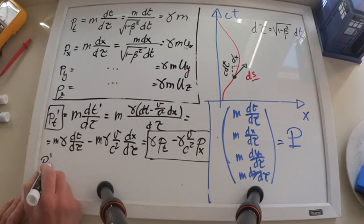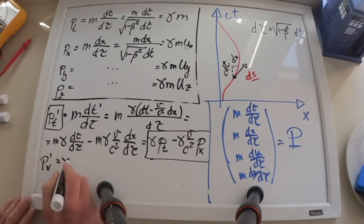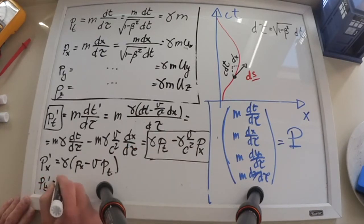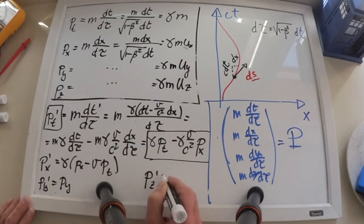Now it's an exercise for you to find how the x, y, and z components of the relativistic momentum transform, and verify that they are these results here.